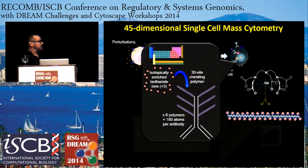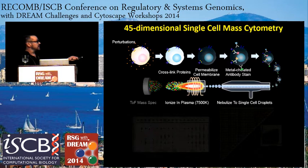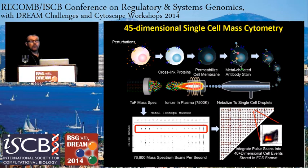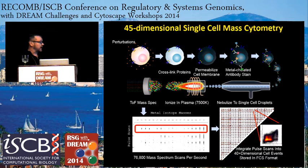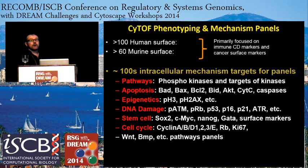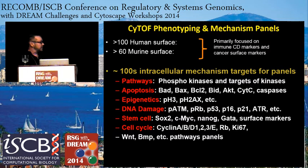We nebulize the cells into the plasma; they become a cloud of ions which are then counted and calibrated — that constitutes what was once a cell. Then the problems begin, because you have 45 or higher dimensional information that needs to be understood in terms of cell populations, how marker values relate to each other within populations, and how they might relate to clinical outcomes. We now have several hundred antibodies working in this system, with enough surface markers to call out cell types.